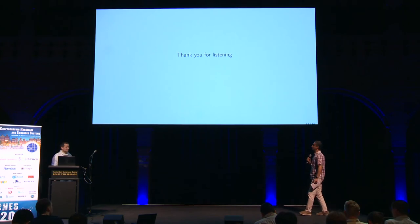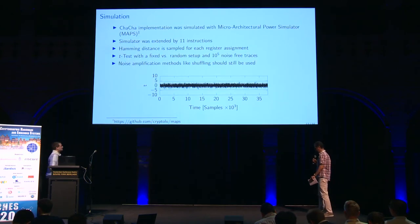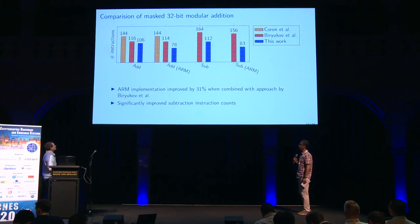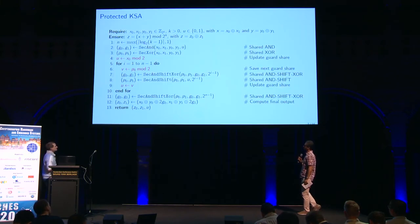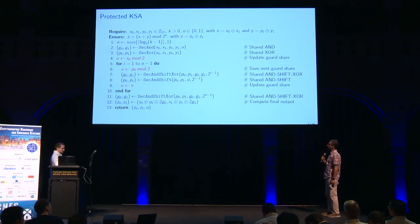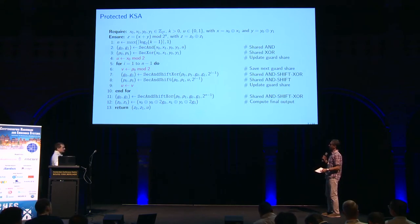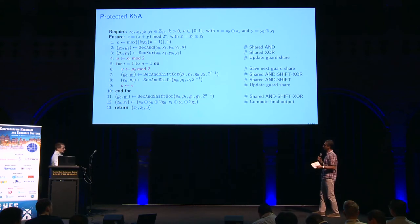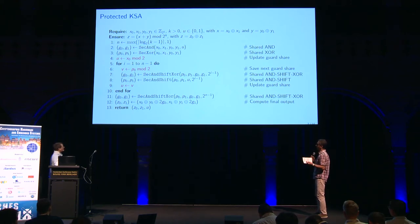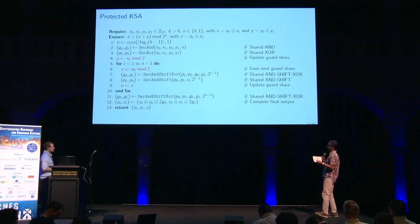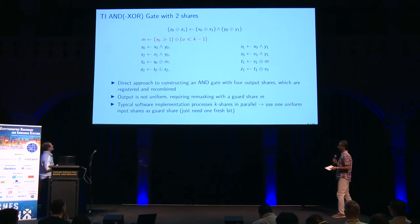Can you go back to one of the source code slides you showed? Can you explain more about the secure-AND-shift or secure-AND-shift-XOR? You are following a threshold implementation concept — can you explain what you do here and what is the difference between the shift-XOR and shift variants? I imagine the XOR is helping because you don't need more fresh randomness.